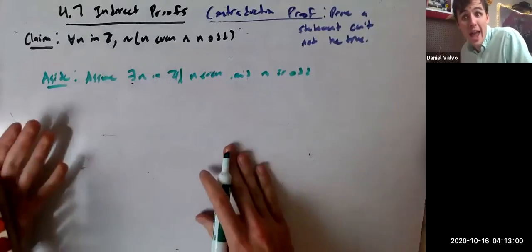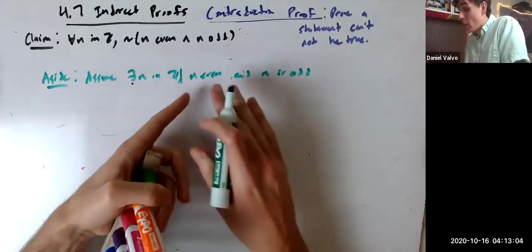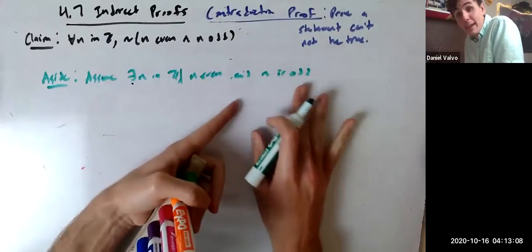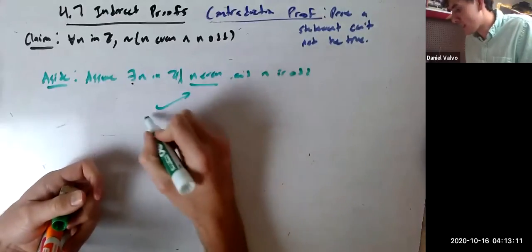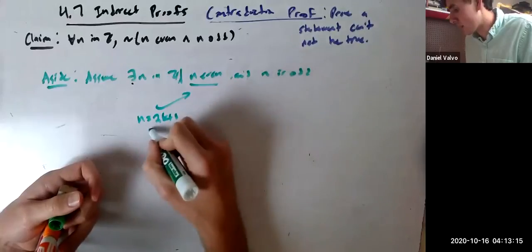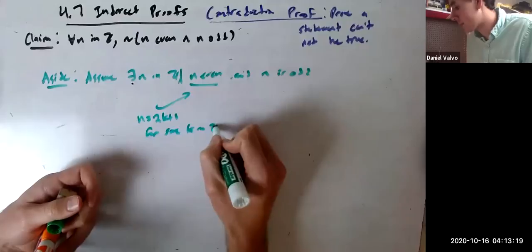What happens then? Now, because we made this assumption, we actually have something to work with. Knowing N is even gives us a foothold. Knowing N is odd also gives us a foothold. Knowing N is odd means that N equals 2K plus 1 for some K in Z.